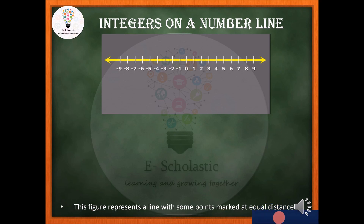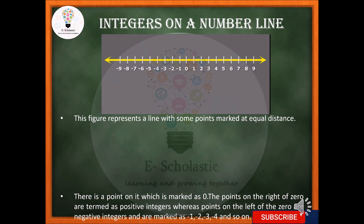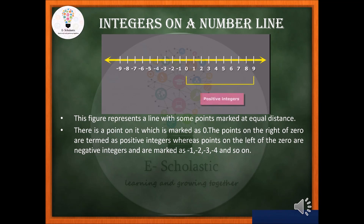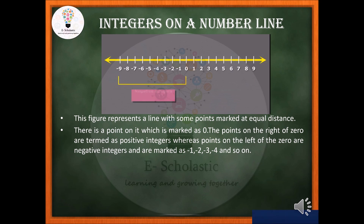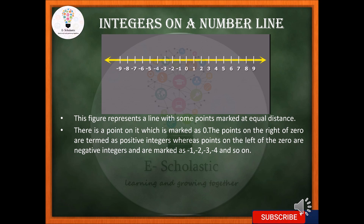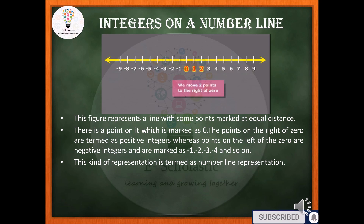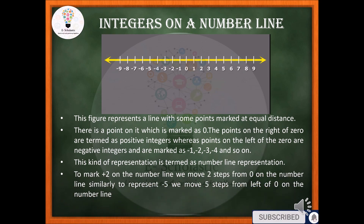Let us see how we represent integers on a number line. This figure represents a line with some points marked at equal distance. There is a point marked as 0. The points to the right of 0 are termed as positive integers, whereas the points to the left of 0 are negative integers, marked as minus 1, minus 2, minus 3, minus 4, and so on. This is termed as the number line representation of integers.